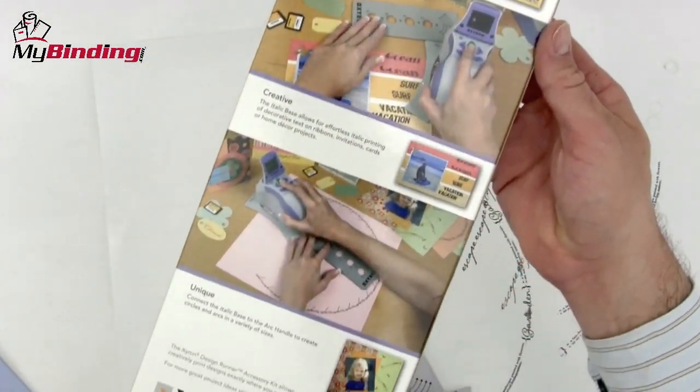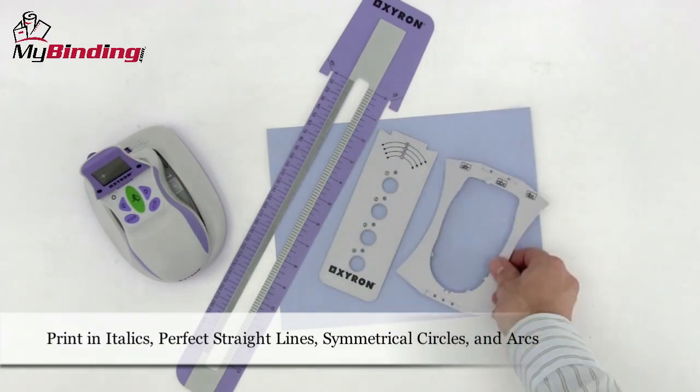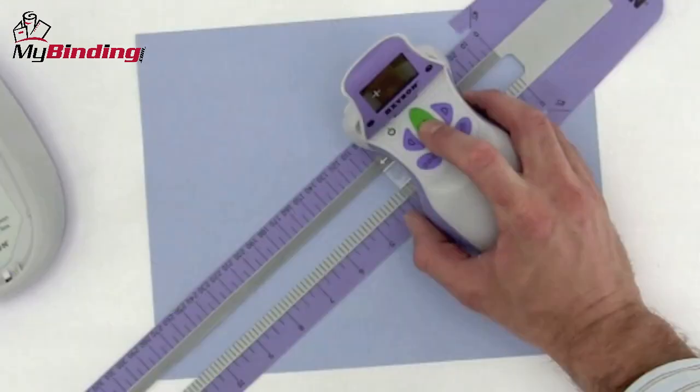This accessory kit enables you to print perfectly straight lines, print in italics, and perfectly symmetrical circles and arcs. The kit comes with three measuring tools that the Design Runner is built specifically to snap into.